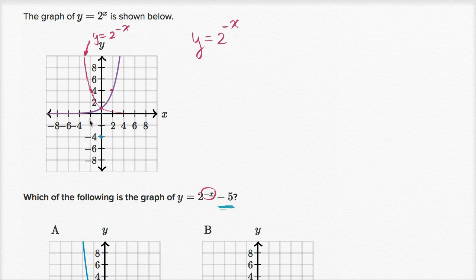It's going to look like that. And then the asymptote, instead of the asymptote going towards y equals zero, the asymptote is going to be at y is equal to negative five. So the asymptote is going to be y equals negative five.